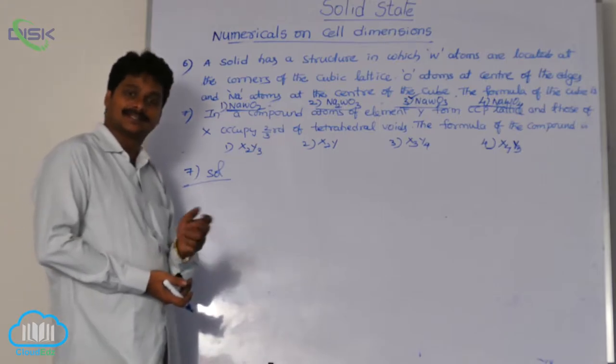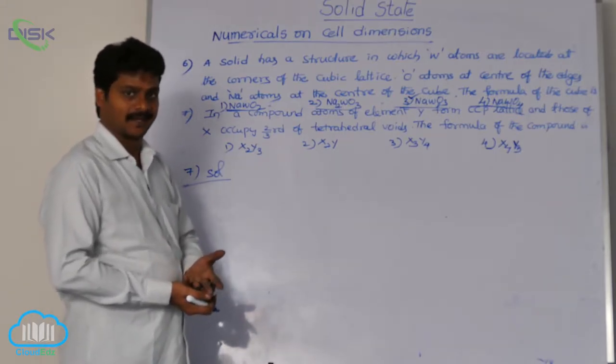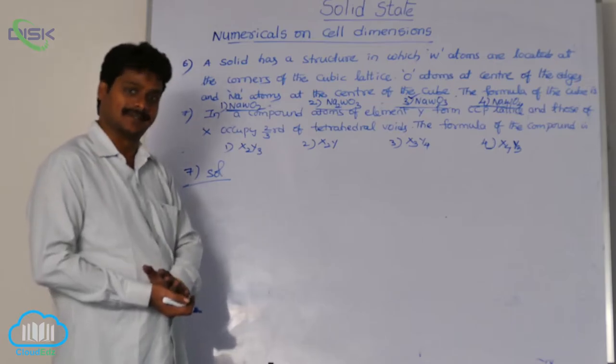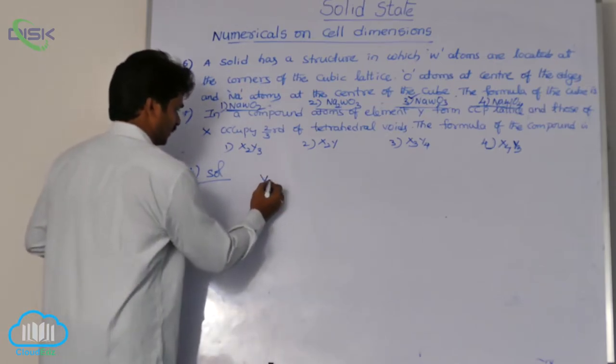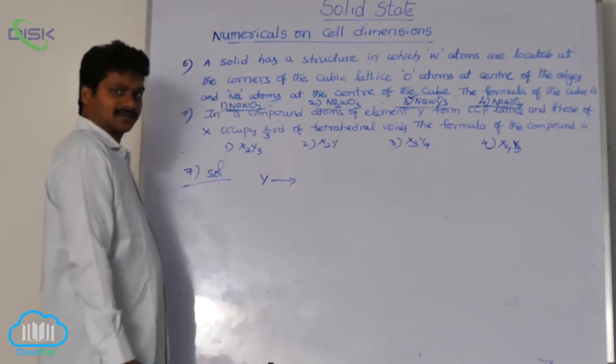In FCC or CCP, atoms are located at eight corners and six face centers. For Y, what is the number of effective atoms?